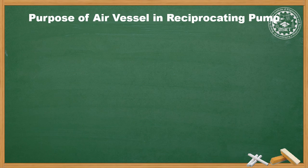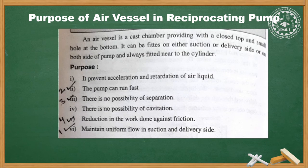The purpose of the air vessel in a reciprocating pump: an air vessel is a closed chamber with a small hole at the bottom, fitted on either the suction side, delivery side, or both, always near the cylinder. Its purposes are to prevent acceleration and retardation of the liquid, allow the pump to run faster, eliminate the possibility of separation and cavitation, reduce work done against friction, and maintain uniform flow in suction and delivery pipes.